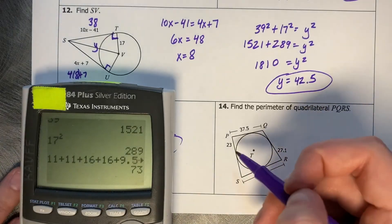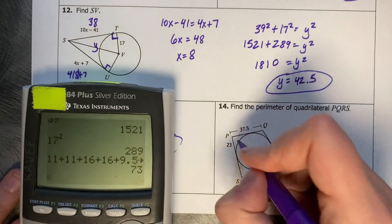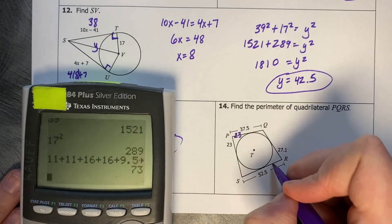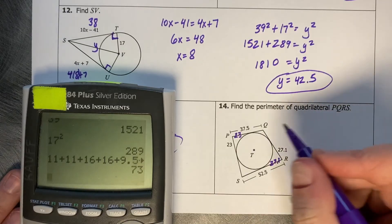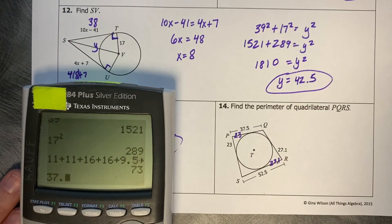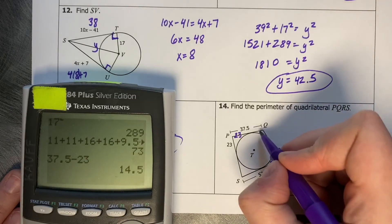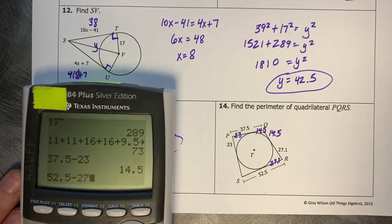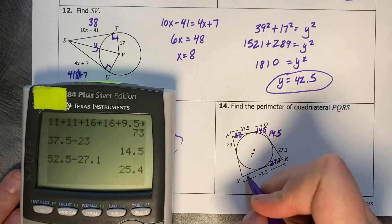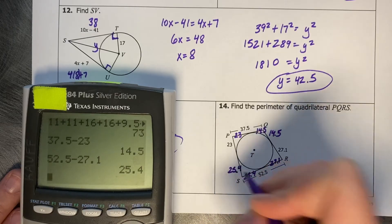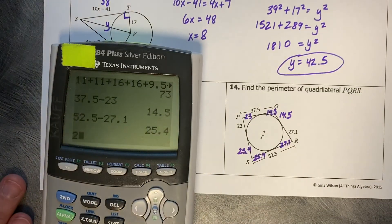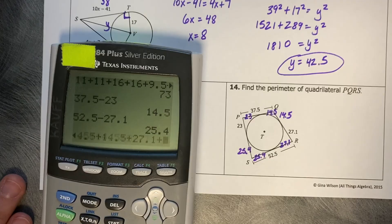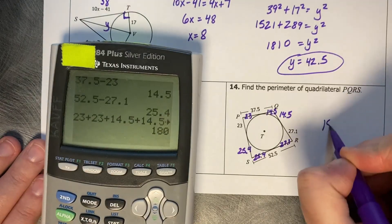Same thing here, but this time they've given us chunks of some of the side lengths. If this is 23 then this is 23; if this is 27.1 then this is 27.1. To get the remaining two chunks, we subtract: 37.5 minus 23 leaves 14.5 and 14.5; and 52.5 minus 27.1 leaves 25.4 and 25.4. Adding everything up: 23 plus 23 plus 14.5 plus 14.5 plus 27.1 plus 27.1 plus 25.4 plus 25.4 equals 180.